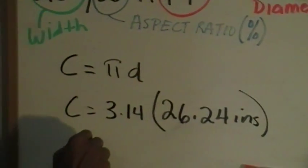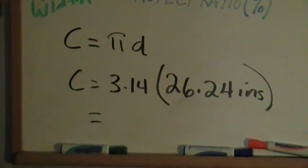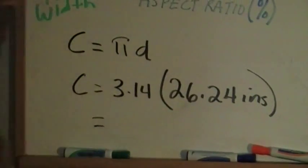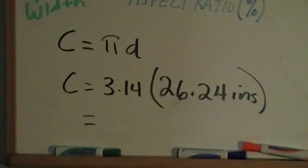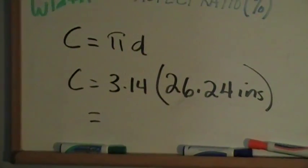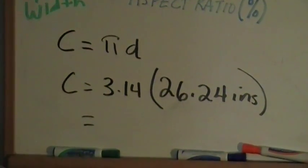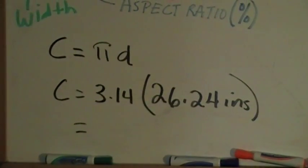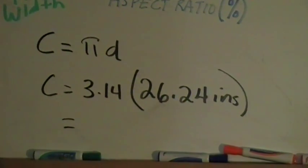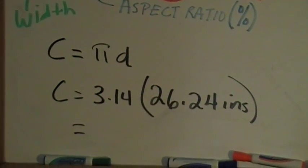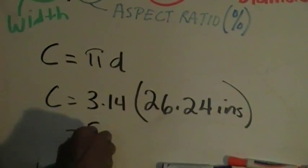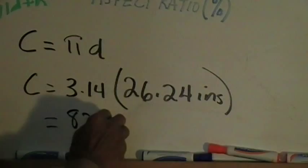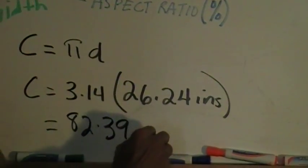So if I multiply this out real quick, bear with me here. If I multiply that out, I get 3.14 times 26.24. So my tire circumference is going to be 82.39 inches.